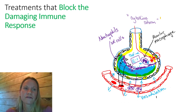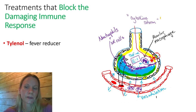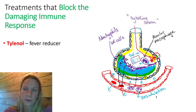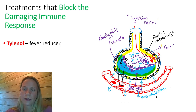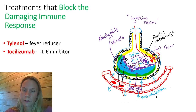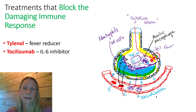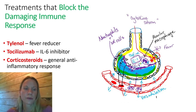Some treatments involve blocking the immune response itself. Tylenol as a fever reducer can be taken over the counter — it reduces the fever triggered as a result of interleukin-1. Tocilizumab is an IL-6 inhibitor — blocking that cytokine which contributes to inflammation. Corticosteroids are general anti-inflammatory medications used to control an overreactive inflammatory response.